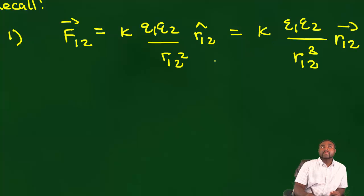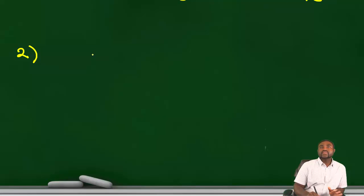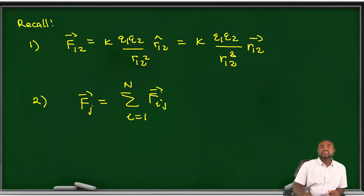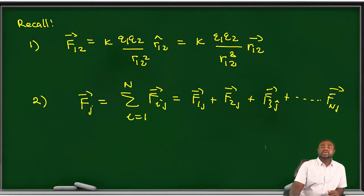If you have several charges, then F J bar will be equal to the sum of I equal to 1 to N of F I J, which is going to be equal to F1 J bar plus F2 J bar plus F3 J bar and so on up to F N J bar. The second statement is the principle of superposition, and the first statement is just Coulomb's Law.